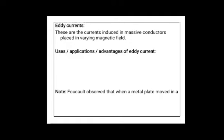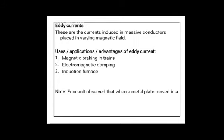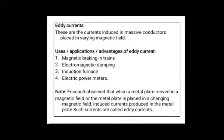Now let us see the applications or uses of eddy currents. Eddy currents are used in magnetic braking in trains, used in electromagnetic damping, used in induction furnace, and used in electric power meters. You can expect a question here: write any two advantages of eddy currents. Just mention any two — no explanation needed, only mention, for example, eddy currents are used in magnetic braking.